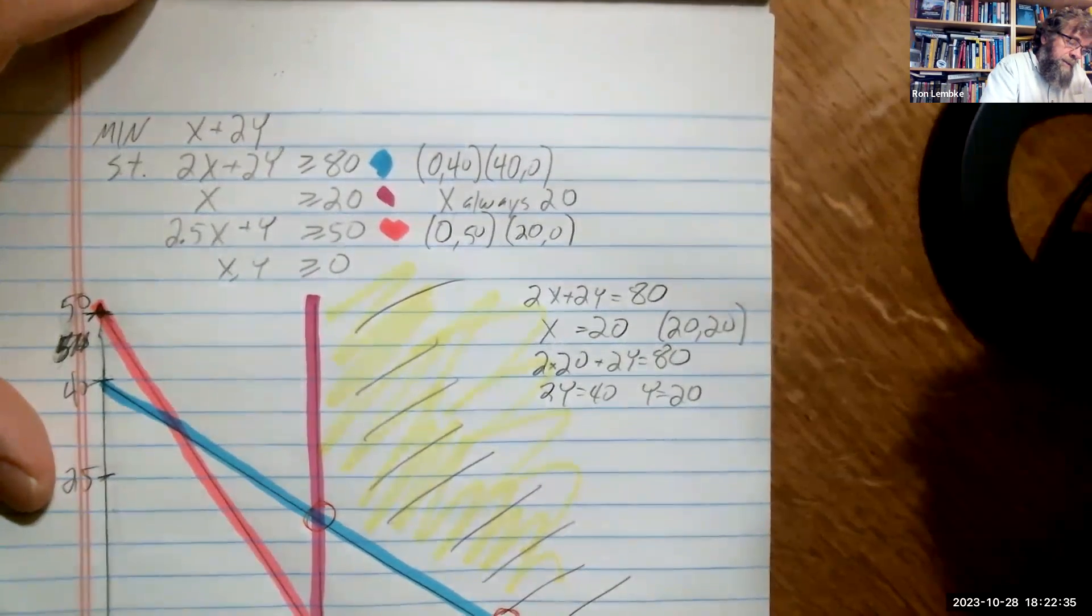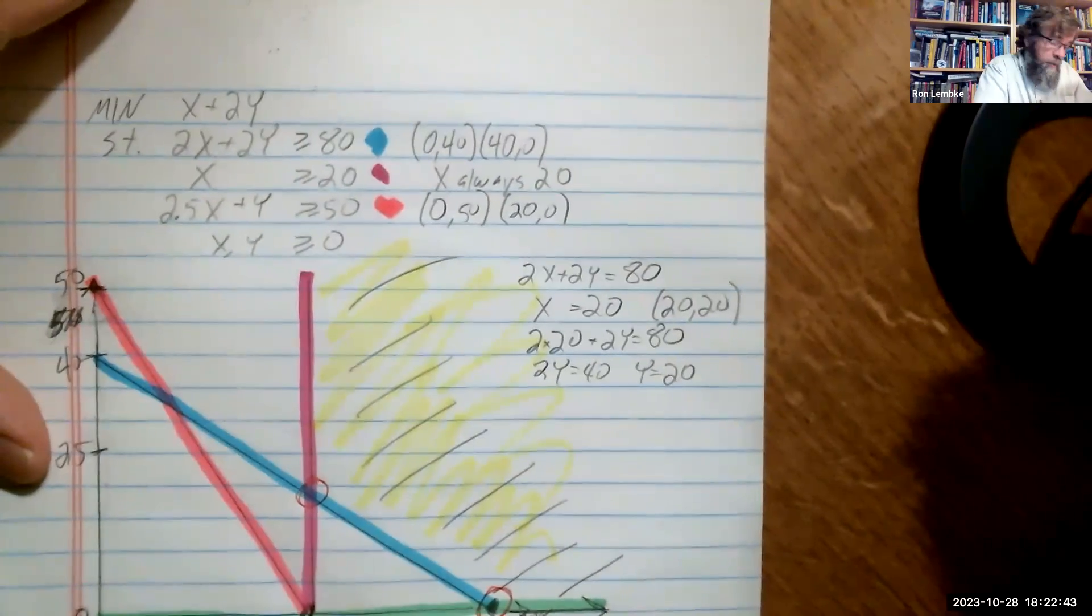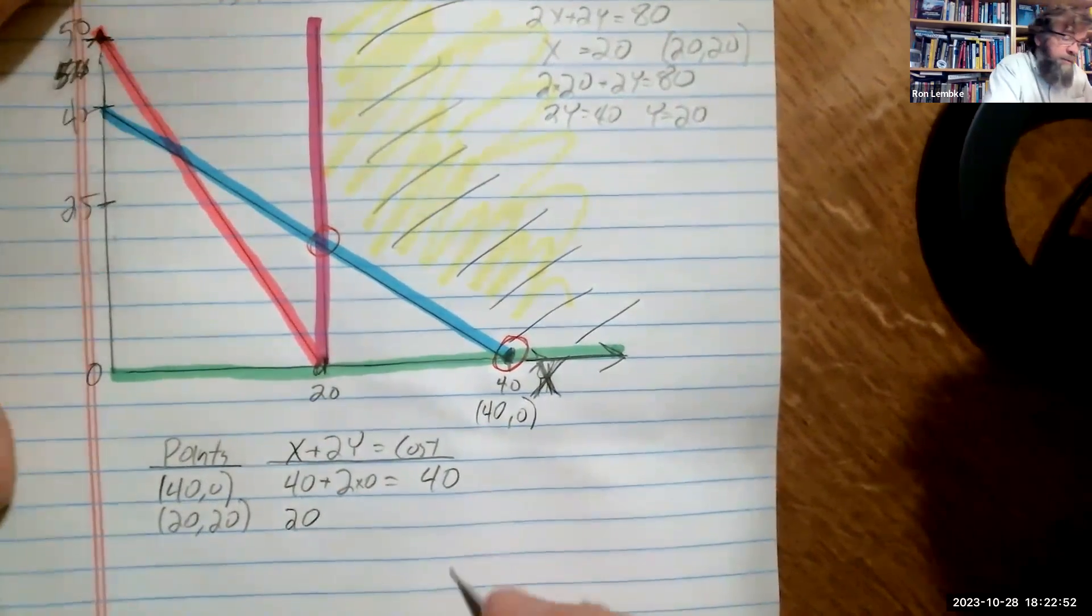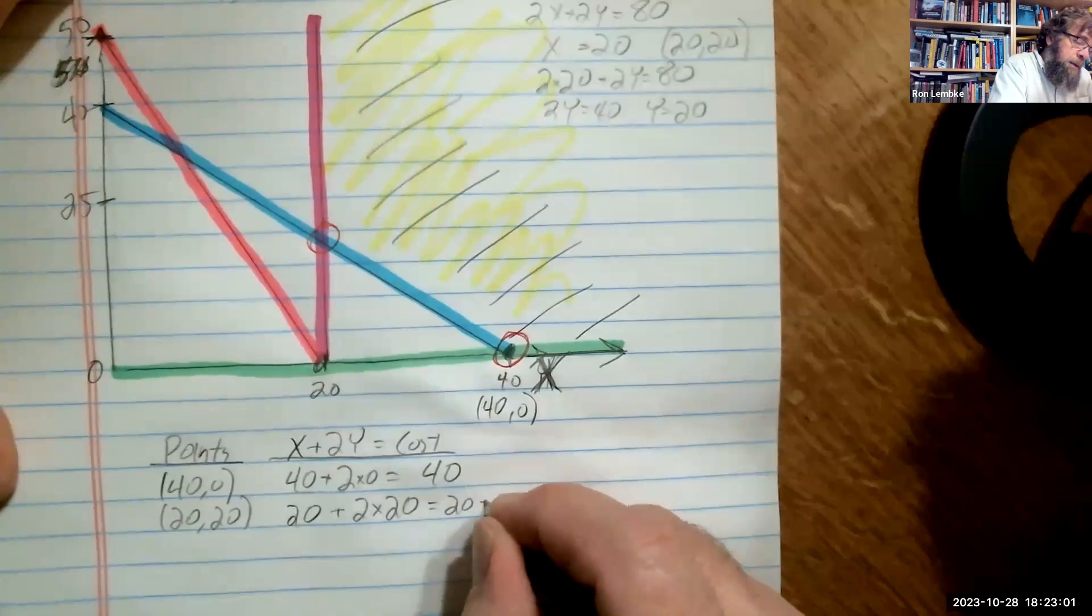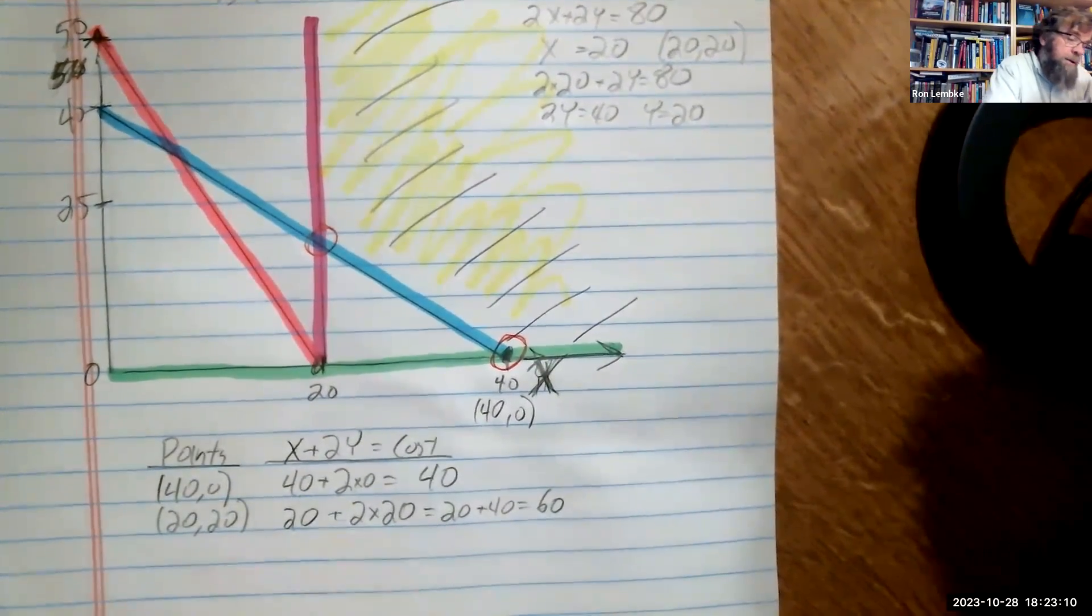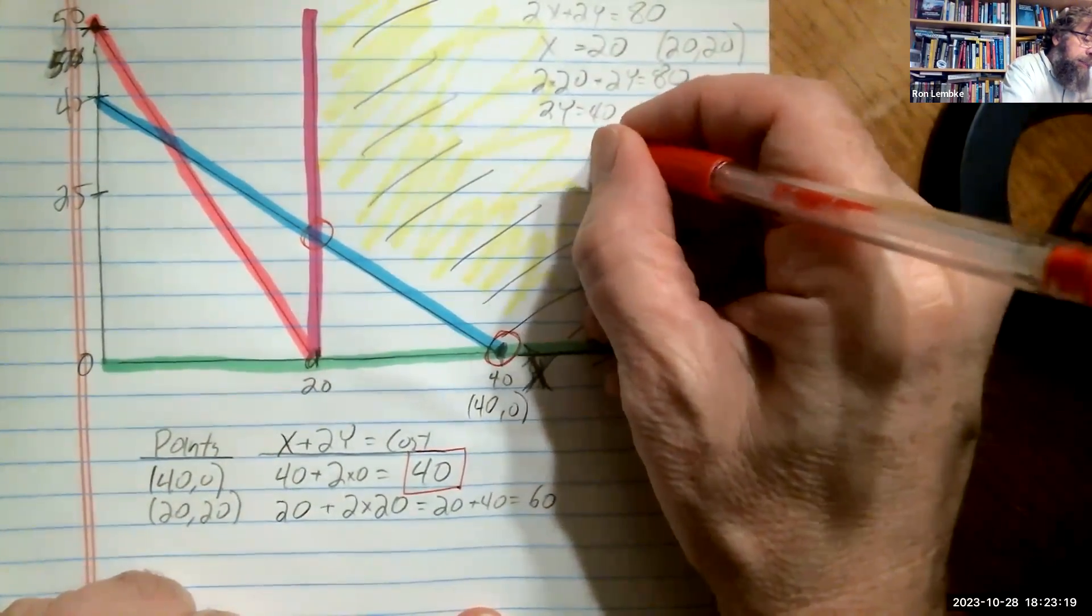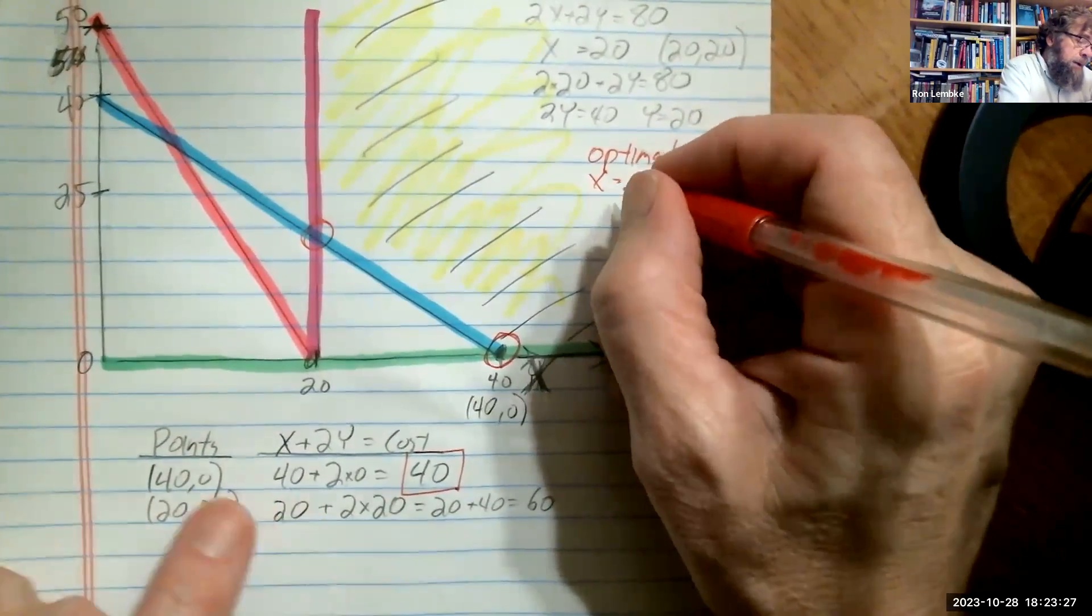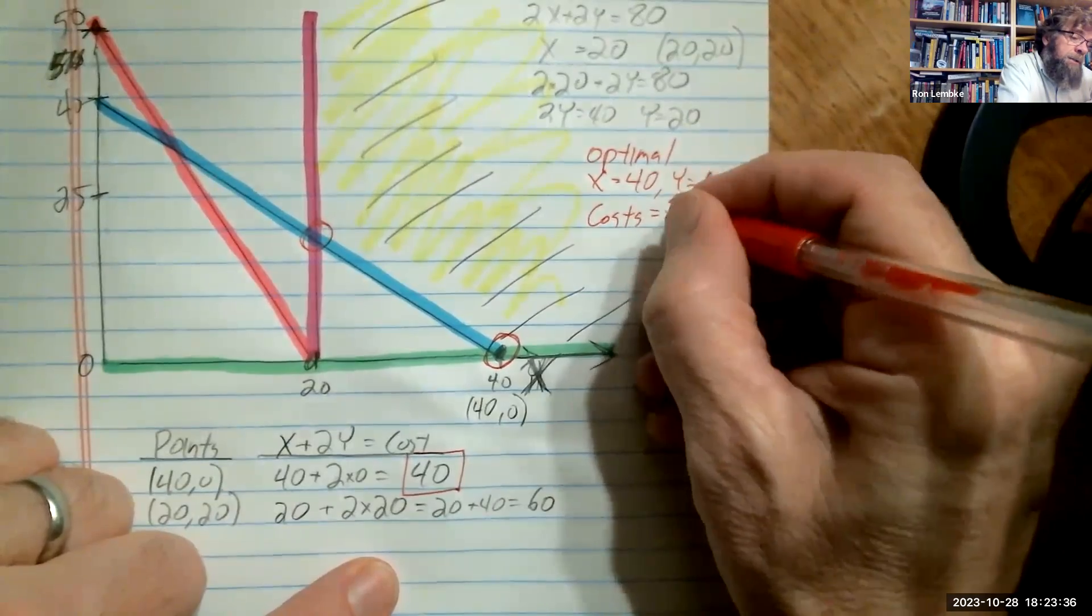And our objective function again is x plus 2y. That's our cost function. So we have x is 40 plus 2 times 0. Obviously, costs there are 40. And then we have x is 20 plus 2 times y, and y is 20. So we have 20 plus 40, we have 60. We are trying to minimize costs here. So the optimal thing is the cost of 40, and the cost of 40 comes at the point 40, 0. So the optimal decision, optimal point, is right here where x equals 40, y equals zero. And our objective function, which in this case our costs, our costs are $40.